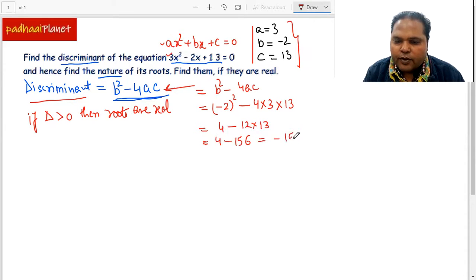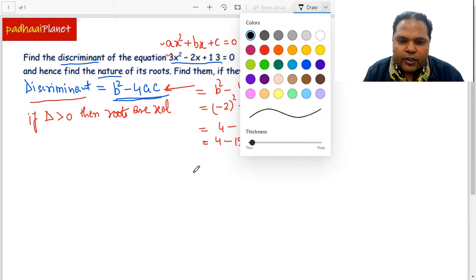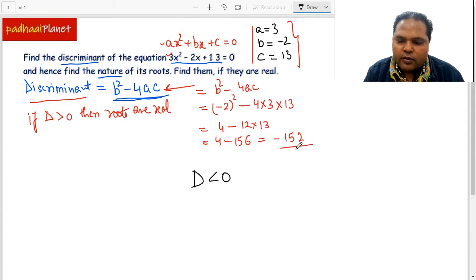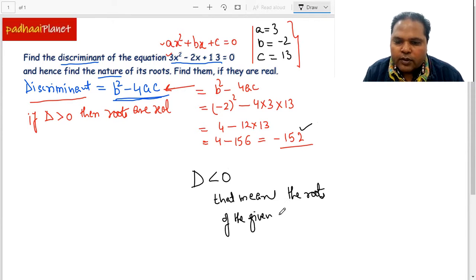Now with this we can clearly see that the value of D is less than 0, because D is coming to -152. That means the roots of the given equation are not real. That's the nature of the roots of this equation - they are not real and hence we cannot find them.